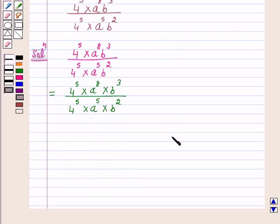Now we know that a raised to power m divided by a raised to power n is equal to a raised to power m minus n.